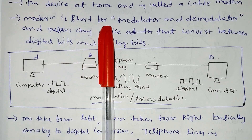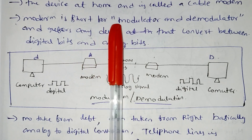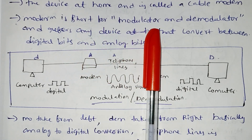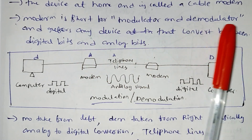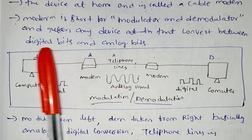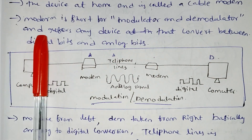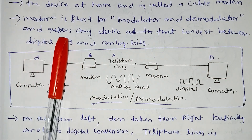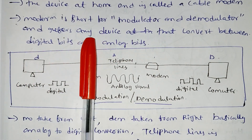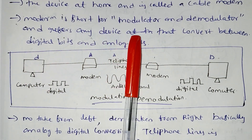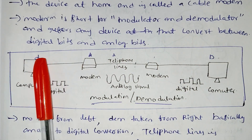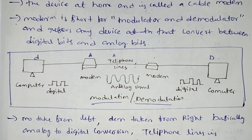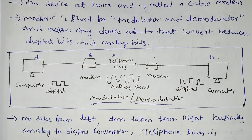The device at the home end is called a cable modem. Modem is short for modulator and demodulator, and refers to any device that converts between digital bits and analog signals.